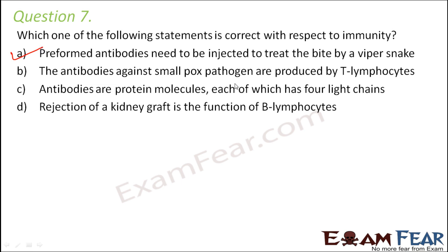Another option states that antibodies against smallpox are produced by T lymphocytes — this is incorrect. B lymphocytes produce antibodies to destroy antigens, while T lymphocytes stimulate B lymphocytes to produce antibodies. T lymphocytes never produce antibodies. Another option claims antibodies have four light chains — this is also incorrect, as antibodies have two light chains and two heavy chains. So our correct option is A.